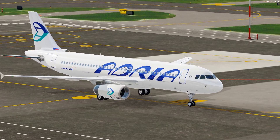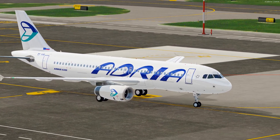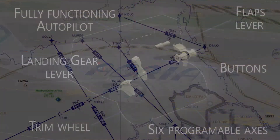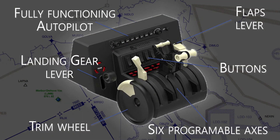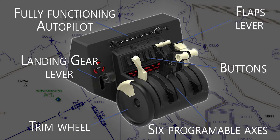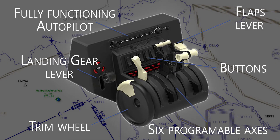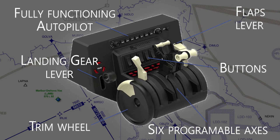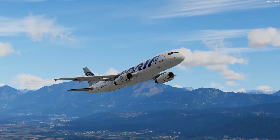First I would like to briefly show you how the Honeycomb Bravo looks like and what it includes in the whole package. As written on the Honeycomb main web page, this hardware addon really is an all-in-one cockpit system featuring six configurable axes, a fully functioning autopilot, and seven programmable buttons. But this still isn't enough, as there is also a trim wheel and gear and flap levers. I got the hardware in May this year and I really like it as it has the maximum outcome of features for the product price.